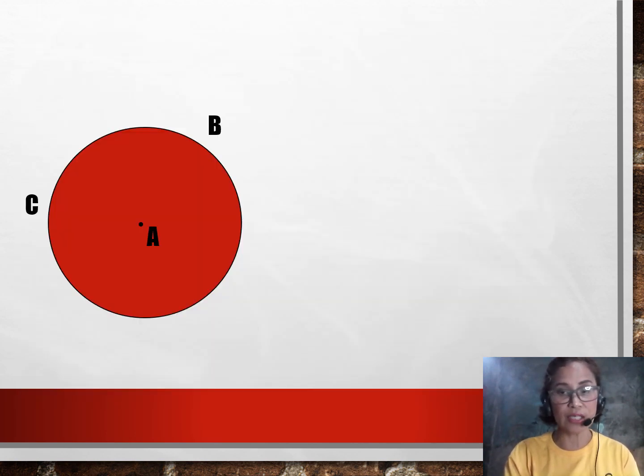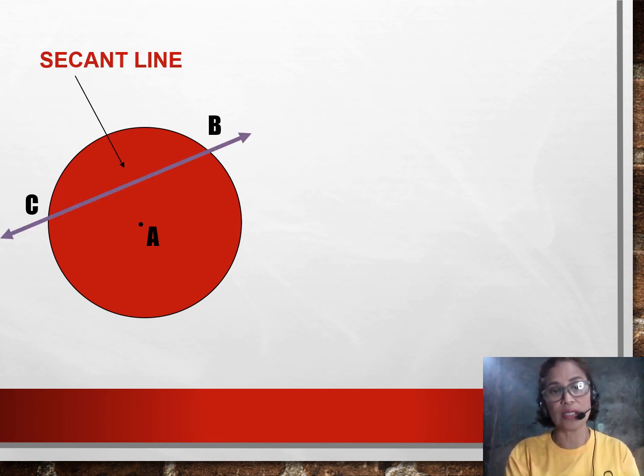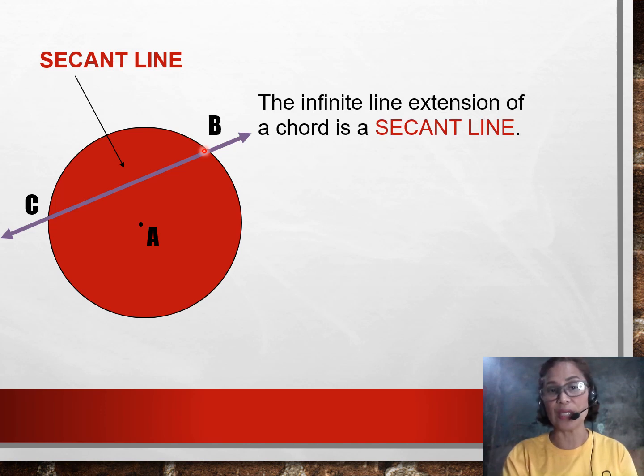Now, I have here additional terms that will help you in relating the other lines connected to a circle. The first one is the secant line. What is a secant line? It seems like a chord. Yes, every secant line contains a chord. As you can see, you have a chord here which is Segment CB. But, what is a secant line? It is just an infinite extension, line extension of a chord.